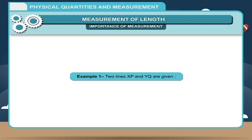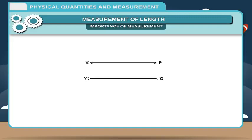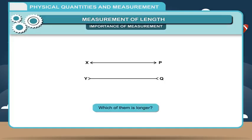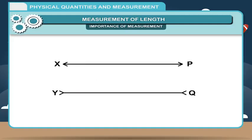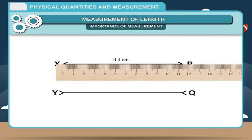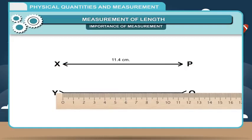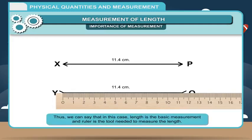Example 1: Two lines, XP and YQ, are given. Look at the two straight lines XP and YQ drawn alongside. Which of them is longer? You may guess that YQ appears to be shorter than XP. But when you measure with the help of a ruler, you find that both lines are equal in length. Thus, we can say that length is the basic measurement and a ruler is the tool needed to measure it.